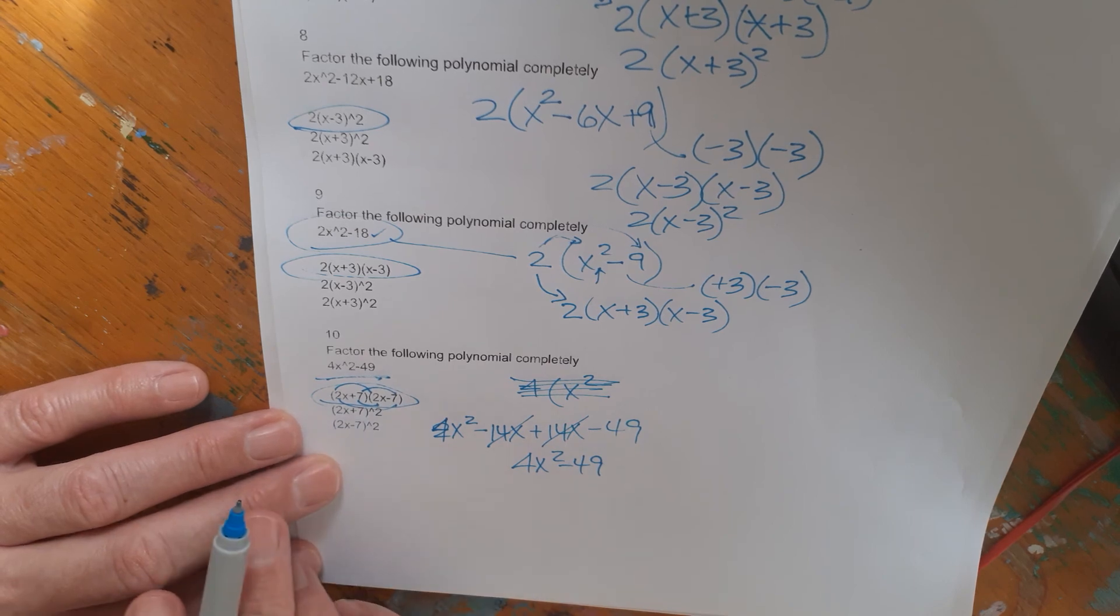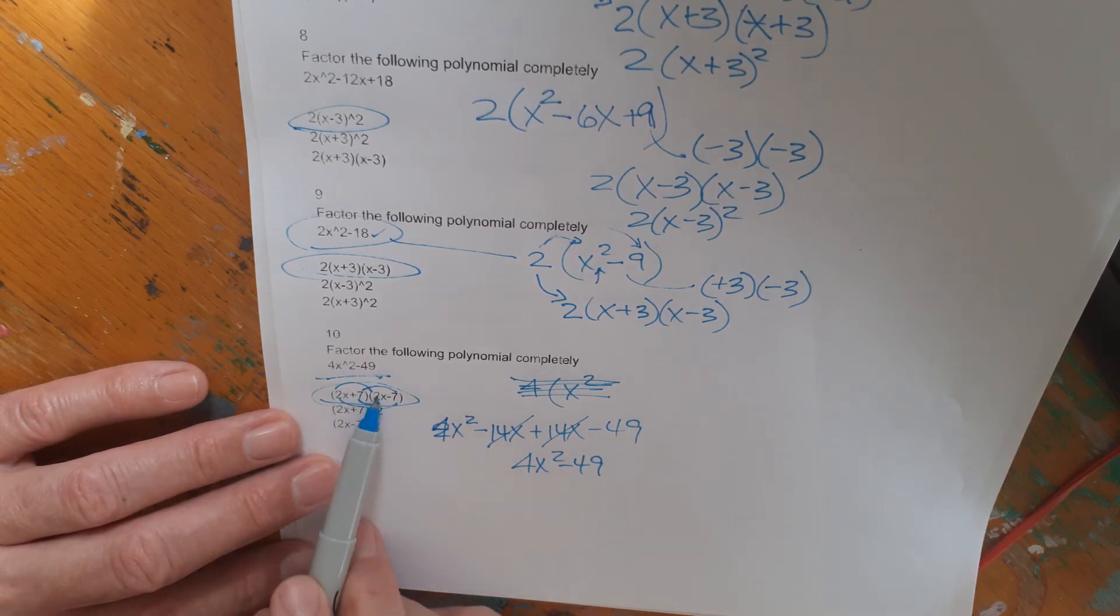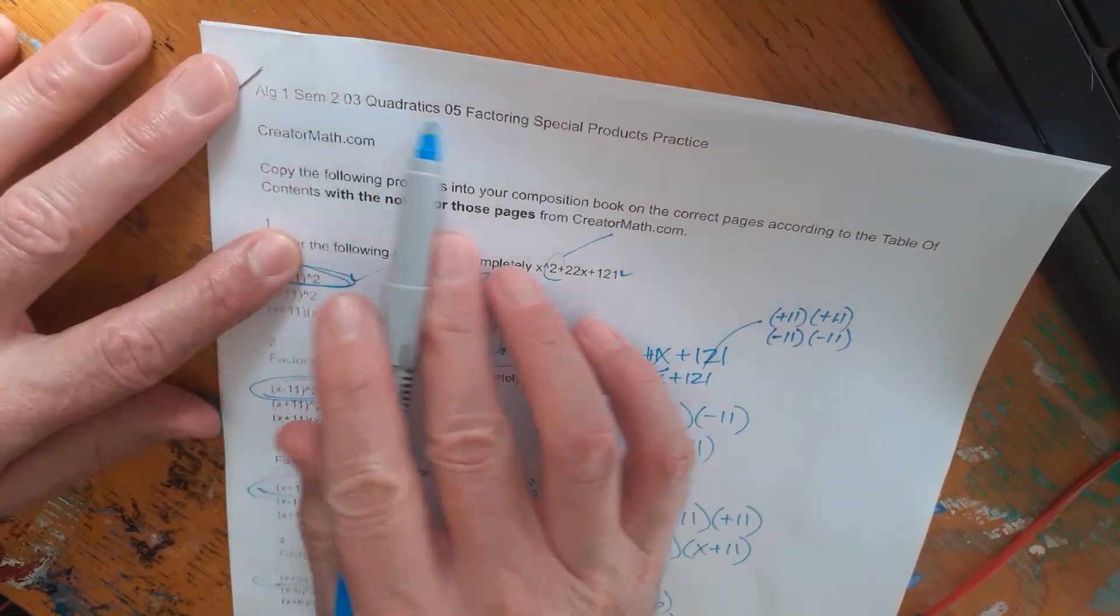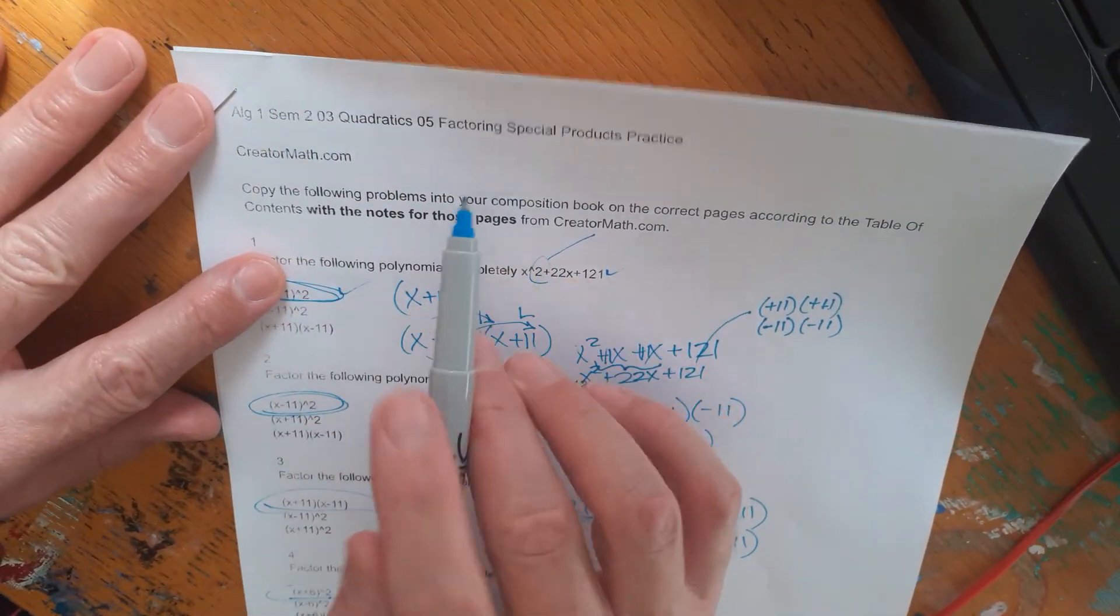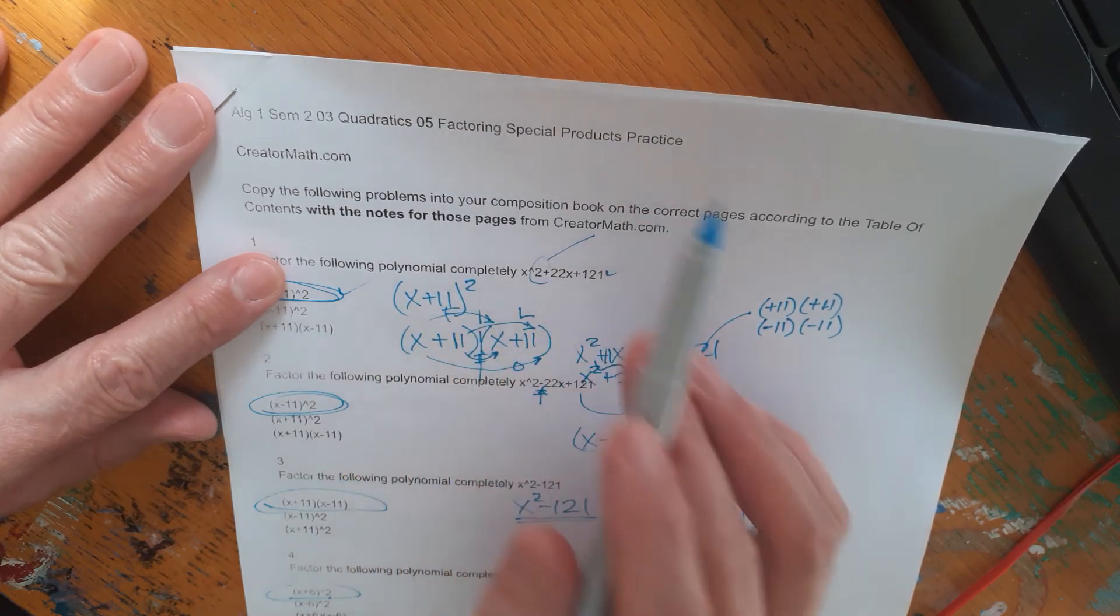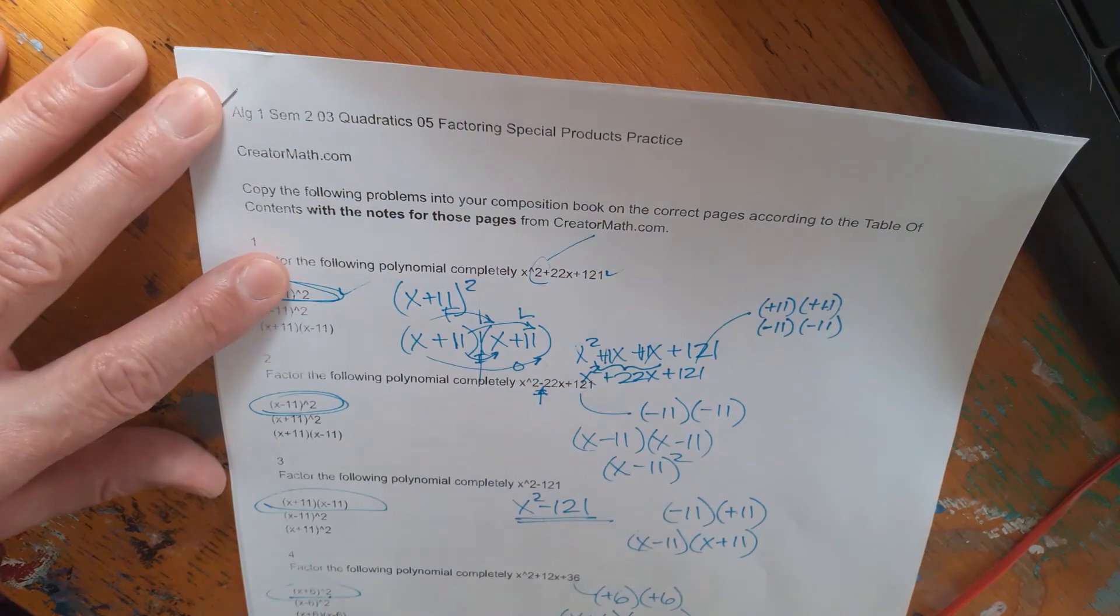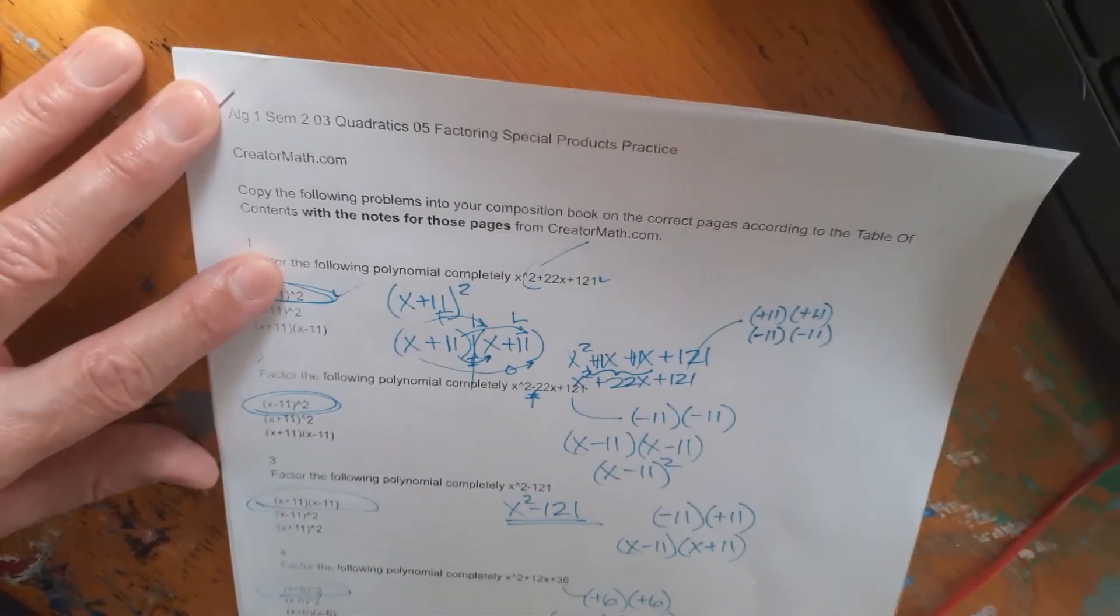So use whatever strategy you can to go ahead and do these. In Algebra 2, you'll probably get a little bit more rigorous methods for factoring, but in Algebra 1, I think this should suffice. So match up this lesson with its assignment by name. Be specific. This one is factoring special products practice. It's on creatormath.com. Make sure you're under the Algebra tab.